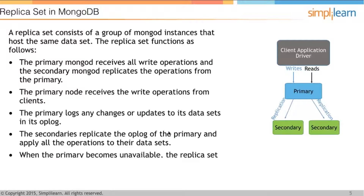How does a replica set in MongoDB work? A replica set consists of a group of MongoDB instances that hold the same data set. The primary MongoDB receives all write operations, and the secondary MongoDB replicates those operations from the primary.